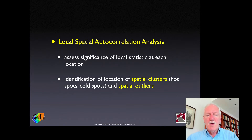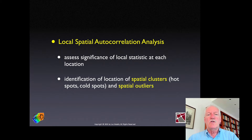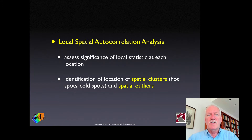The most commonly used LISA is the local Moran statistic. In a couple of lectures from now, we'll look at how the local Moran statistic is adjusted for dealing with rates or proportions. You should be familiar with the concept of a local Moran statistic at this point.